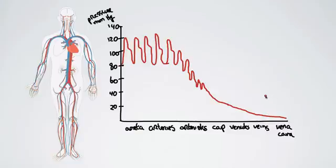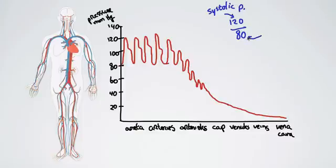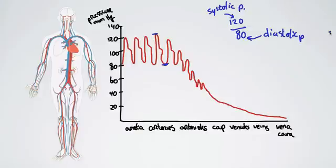When the doctor takes your pressure and says you're in excellent health, the numbers you usually hear are 120 over 80. At the top we have the systolic pressure, and here we have the diastolic pressure. Systolic is during systole — contraction — so that's the higher point. Diastolic is during relaxation, where we have a lower point. If you have 120 over 80, you are a happy camper. So that is blood pressure — when you're measuring it, you're measuring the difference between systole and diastole, contraction and relaxation.